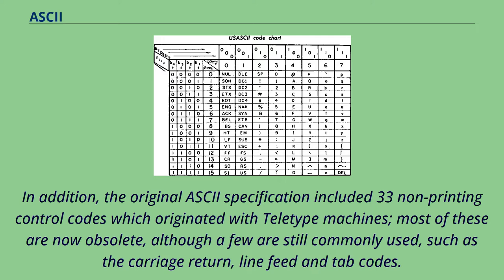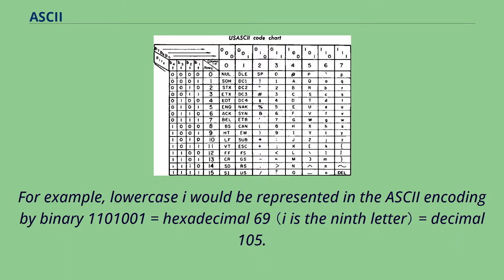In addition, the original ASCII specification included 33 non-printing control codes which originated with teletype machines. Most of these are now obsolete, although a few are still commonly used, such as the carriage return, line feed, and tab codes. For example, lowercase 'i' would be represented in ASCII encoding by binary 1100 1001, equals hexadecimal 69, equals decimal 105.